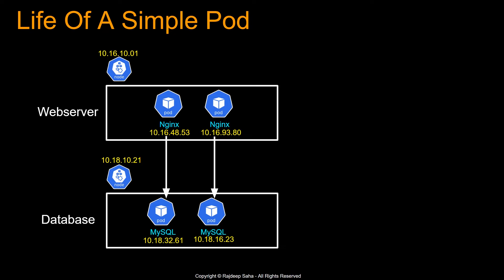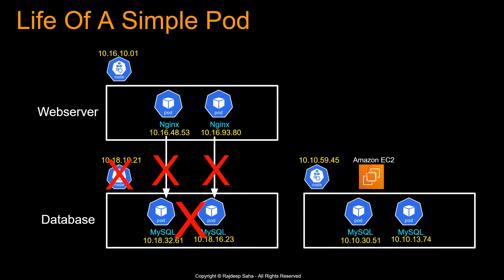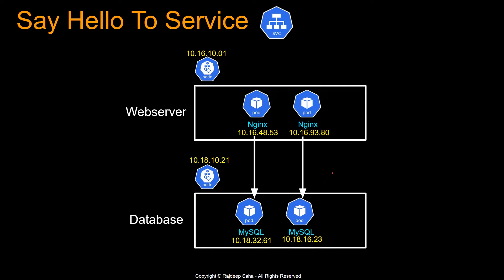Let's go one more step. What if instead of a pod crashing and burning, maybe the whole node dies? The connections to this node die, the pod dies. So another node comes up — basically an Amazon EC2 with a new IP address — two new pods come up with two different IP addresses. So these Nginx pods have no way to discover or reach these MySQL pods. All of these problems get solved by service.